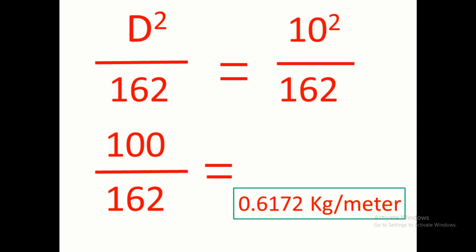With the help of the weighing scale, the formula is simple: D² by 162. I repeat it again: D² by 162. Suppose the diameter of the bar is 10 mm, then it becomes 10² by 162, 100 by 162 is equal to 0.6172 kg per meter.